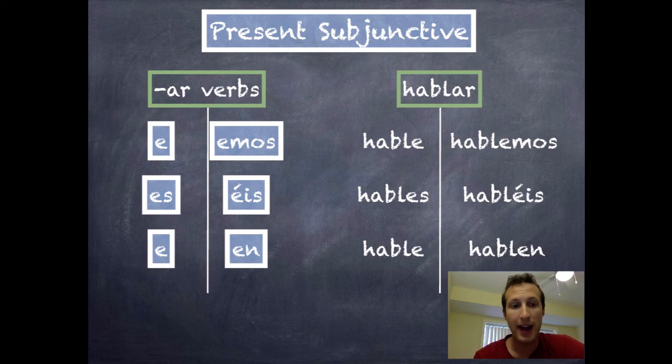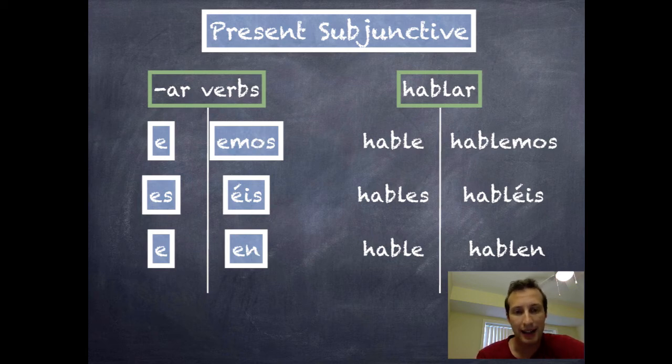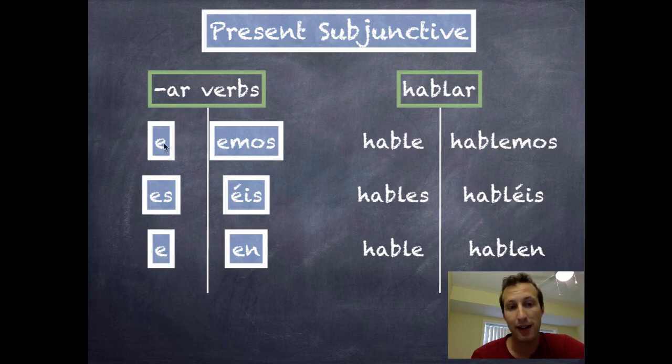The endings are E, ES, E, EMOS, EIS, EN, which happen to be exactly the same ones, except for the YO form which is just copied over from third person, as the ER endings for the indicative.